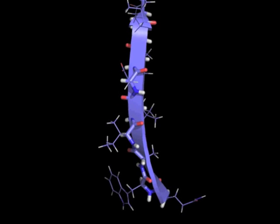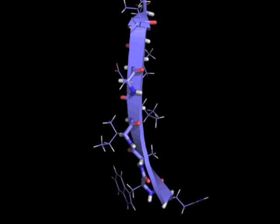Notice how the sidechains stick out of the wide flat sides of the ribbon, while the backbone amide hydrogen and carbonyl oxygen atoms stick out of the narrow edge.